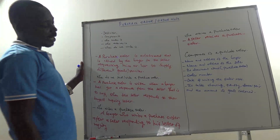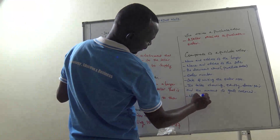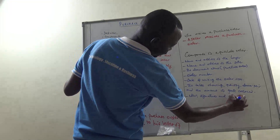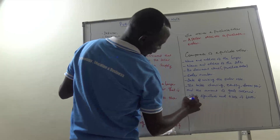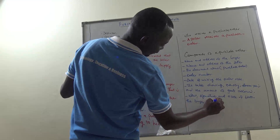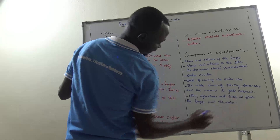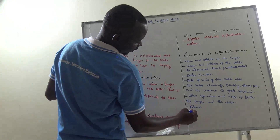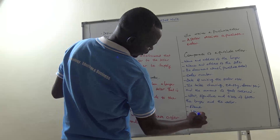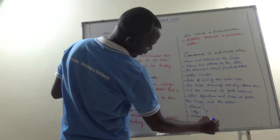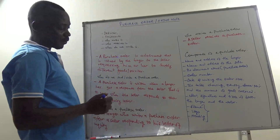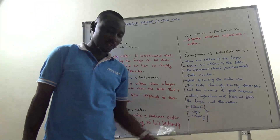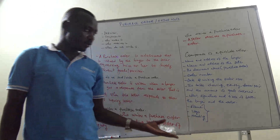Then we have the name, signature, and title of both the buyer and the seller. Then we have the frame, the logo, the heading, and the opening statement. Of course these are usual, because we said on every document they are supposed to be there. There are others which could be added, but these are the major components of the purchase order.